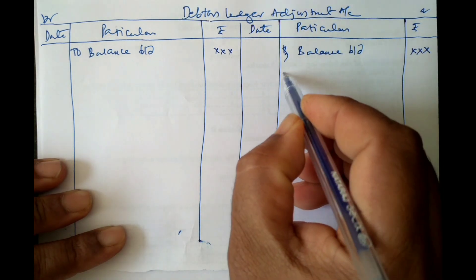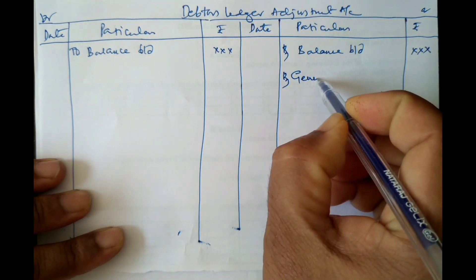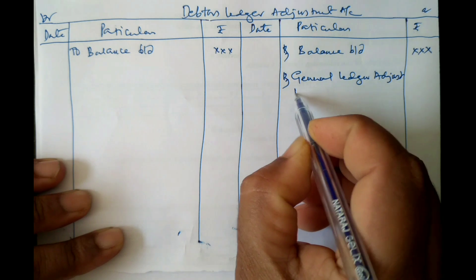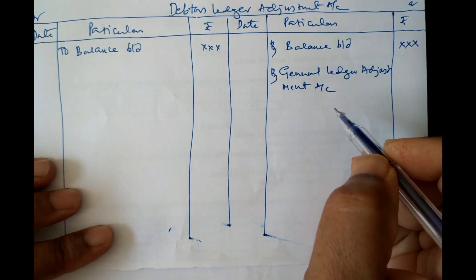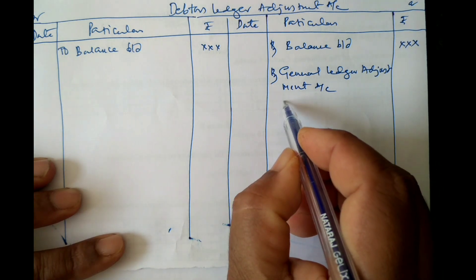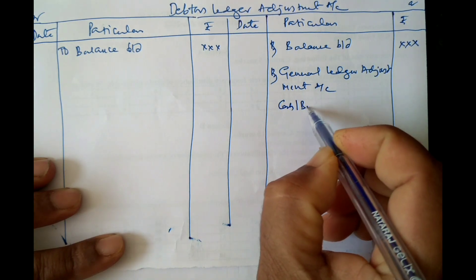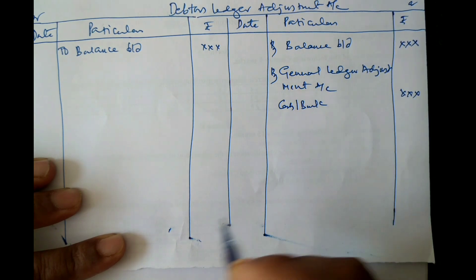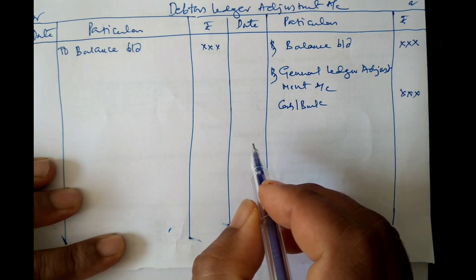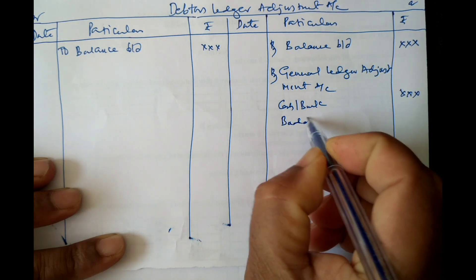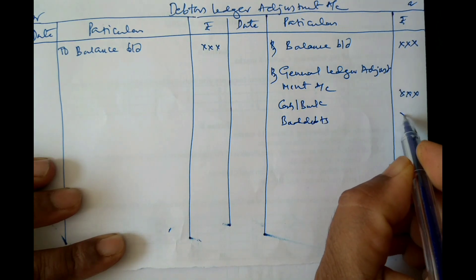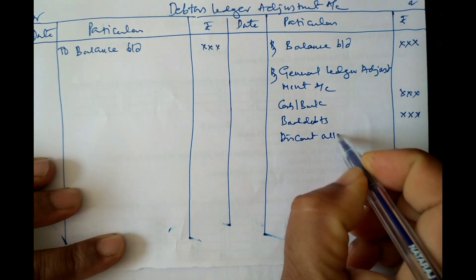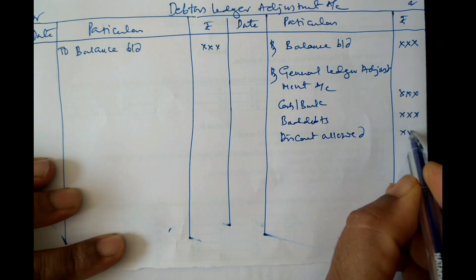The entries are made through the General Ledger Adjustment Account. The usual entries on the credit side are cash or bank — meaning cash received from debtors or cheques received from debtors must be credited to the Debtors Ledger Account. If there is any bad debts, that must also be taken to the credit side. Next, there is Discount Allowed, which is also on the credit side.